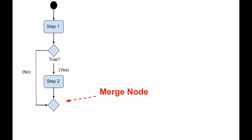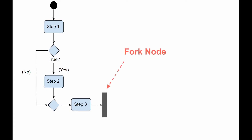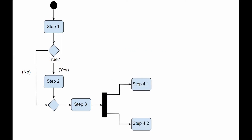Merge node: it merges the various threads that were created after the decision node. Fork node: splits behavior into a set of parallel or concurrent flows of activities.